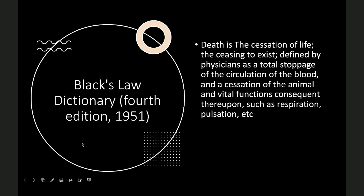Before we start, let's go into Black's Law Dictionary, which was being used at that time. 1951 is pretty prominent, and we'll talk further about why. In that dictionary, also used in courts, death was defined as a cessation of life — defined by physicians as a total stoppage of the circulation of the blood and cessation of the animal and vital functions consequent thereupon, such as respiration and pulsation. It was a broad definition with no precise determination point.